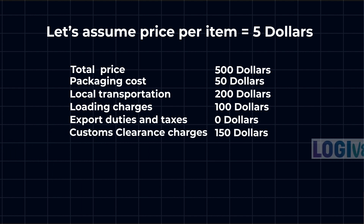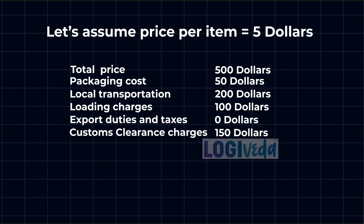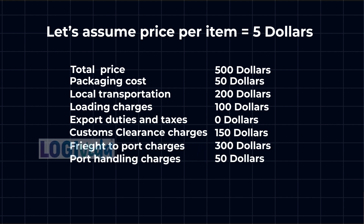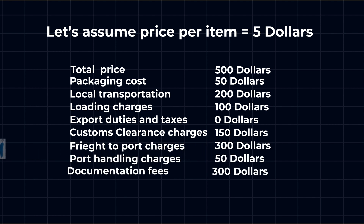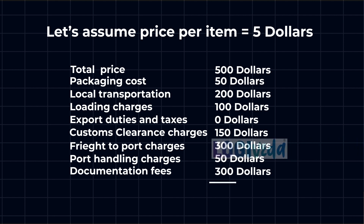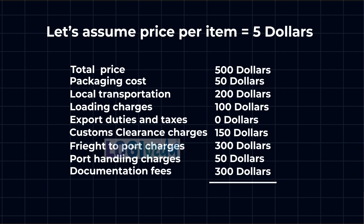Custom clearance charge $150, freight to port charges $300, port handling charges $50, documentation fees $300. Now let's add all of this up to get the FOB price.